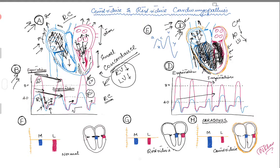Let's see how this looks in the pressure waveform in the cath lab — picture D. The blue waveform is your RV and the red is your LV. As the patient goes from expiration to inspiration, there is more filling of the right ventricle.